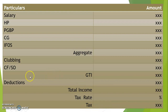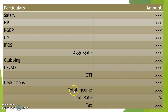In short, deductions are nothing but a set of items — which can be in the nature of payments, incomes, or certain other states of being — which are to be deducted from our gross total income in order to find our total income or taxable income, on which we finally decide whether we have to pay tax and, if so, apply the required rate and calculate the tax.